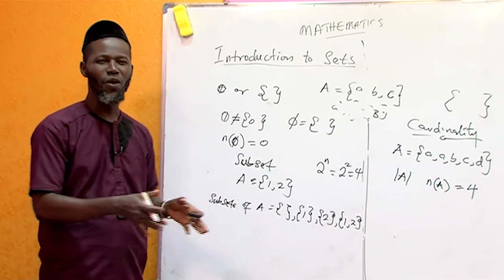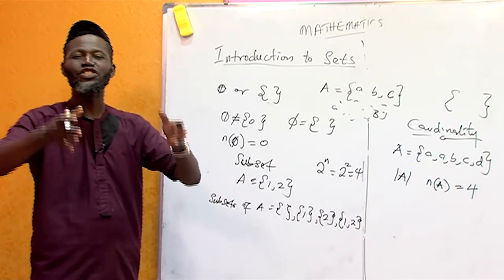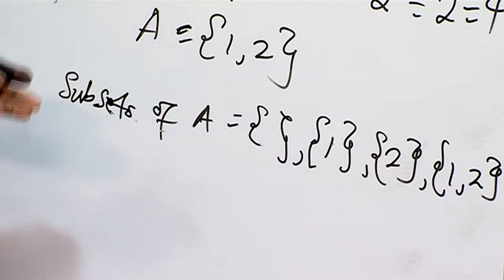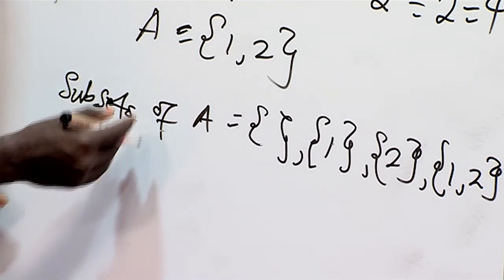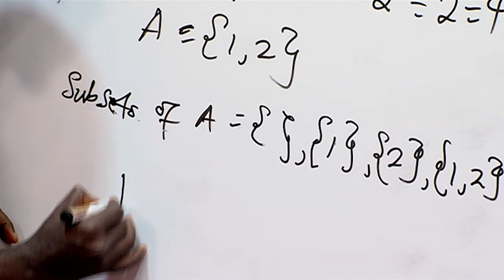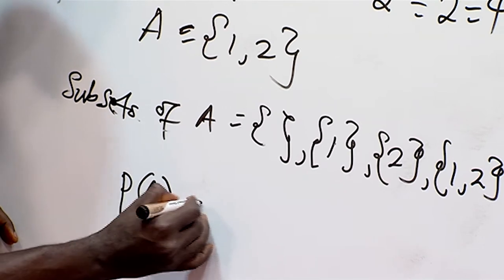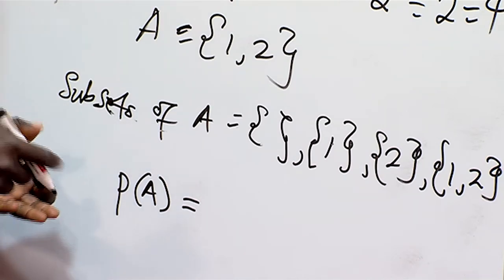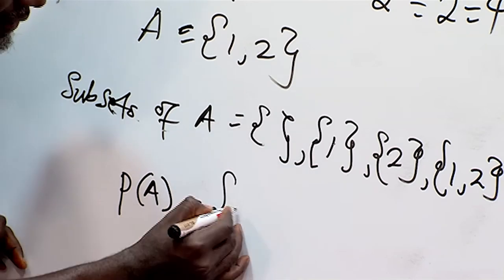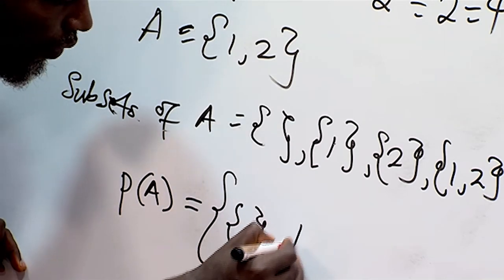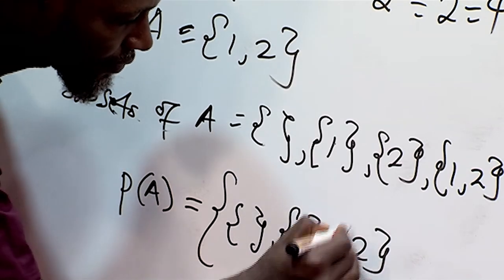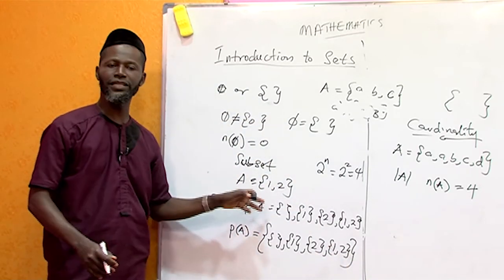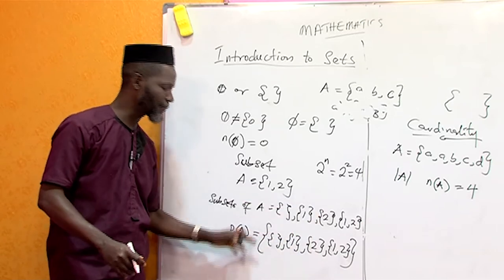Now let's talk about the power set. The power set simply means the set of all subsets. For example, as we are given A, if they ask you to find the power set of A, you write all the subsets of A enclosed in curly brackets as elements. So the power set of A equals the set containing: the empty set, {1}, {2}, and {1, 2}. This is the power set of A, while the previous listing was the subsets of A.